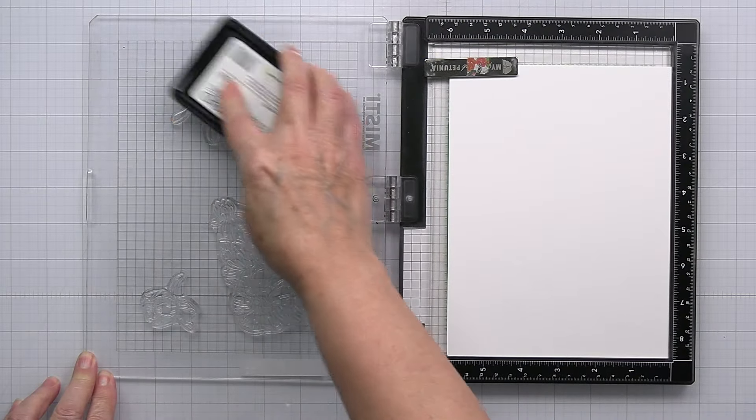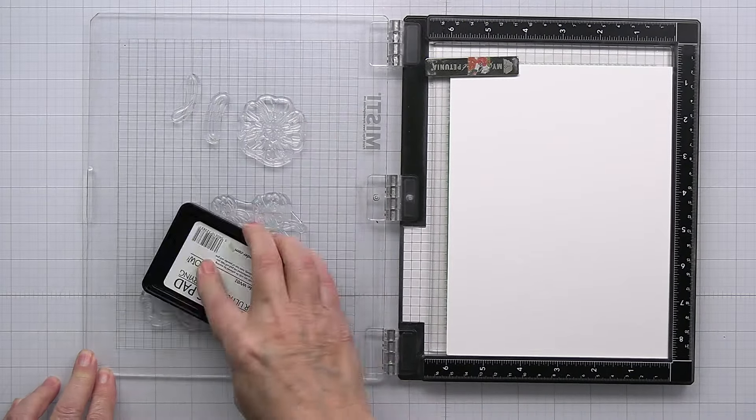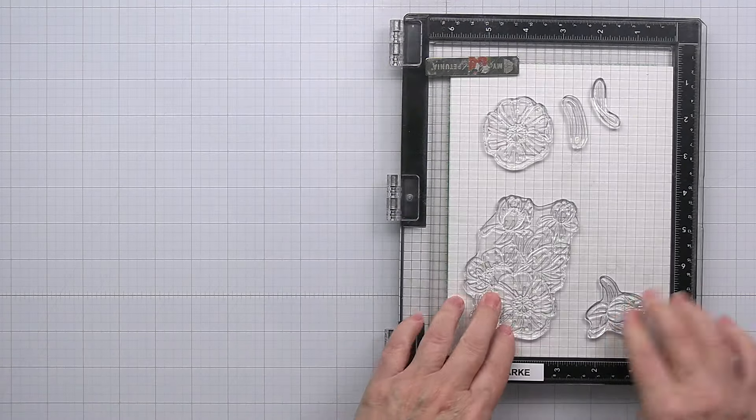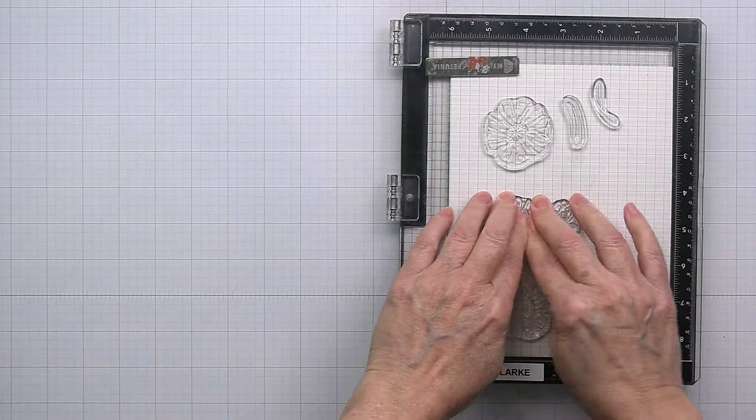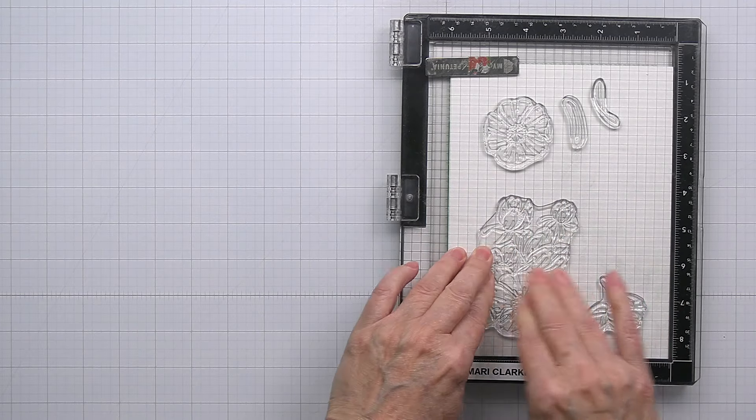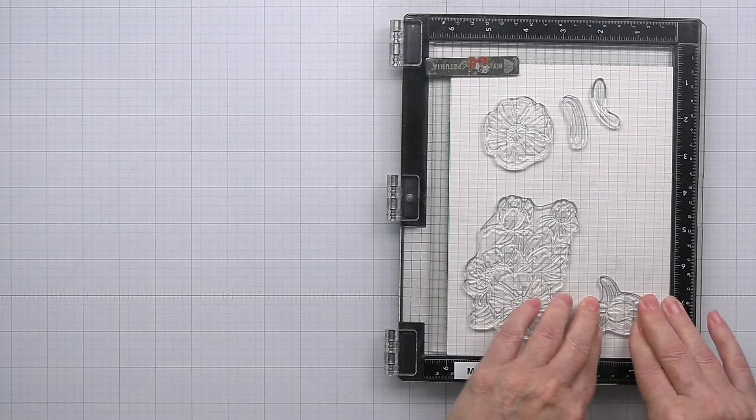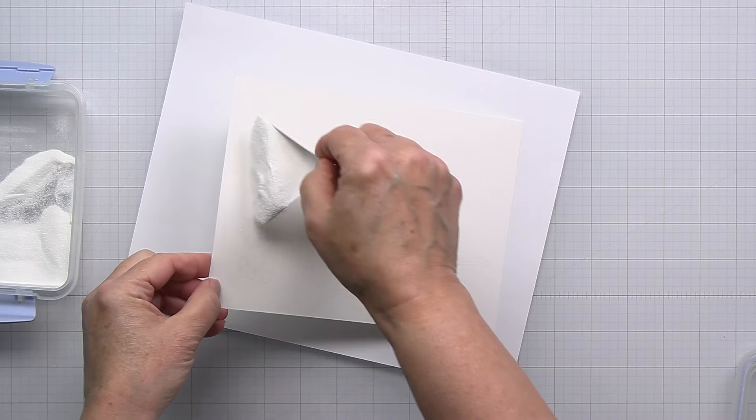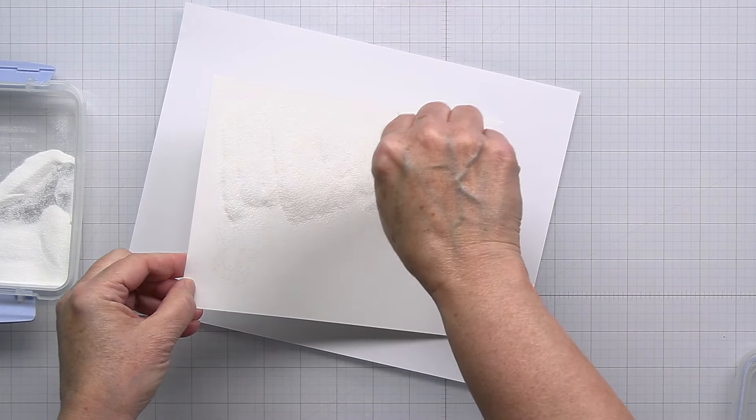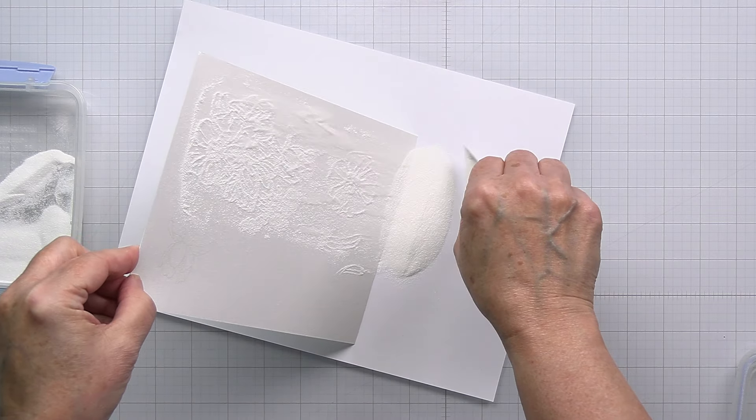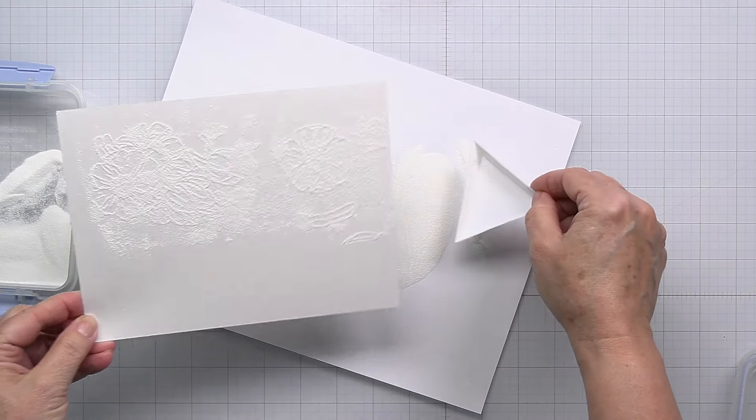I'm going to start off here with some watercolor paper in my MISTI and I'm going to ink up the stamps here with some clear embossing ink and give that a really good press. I'm going to put some white embossing powder over top of that embossing ink stamped image and that embossing powder is going to adhere to that clear ink.